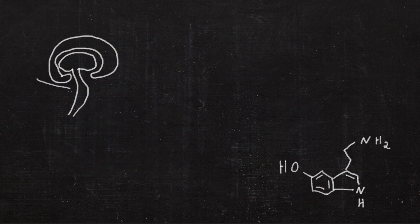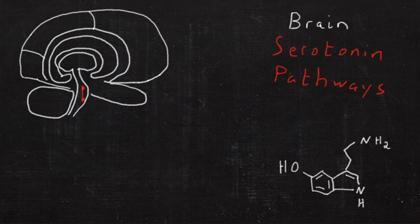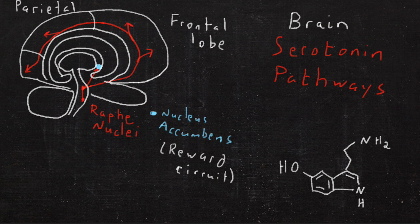Now, in the brain, the serotonin pathways start in the brainstem with the raphe nuclei, where it is synthesized. First, it goes to the nucleus accumbens, the reward circuit, and then throughout the lobes of the brain.